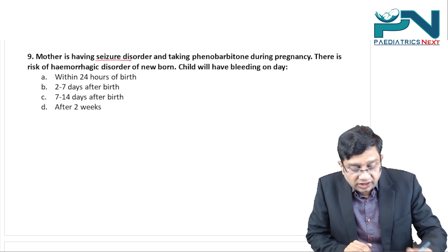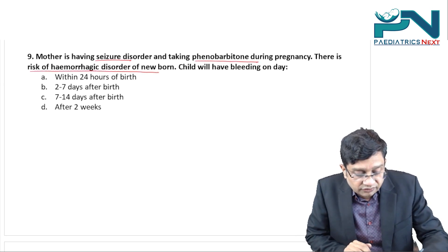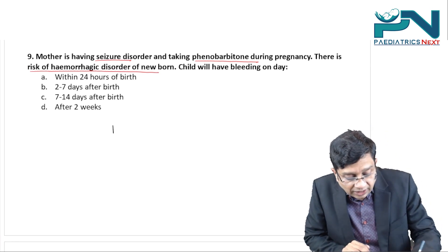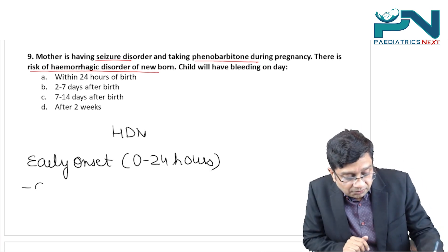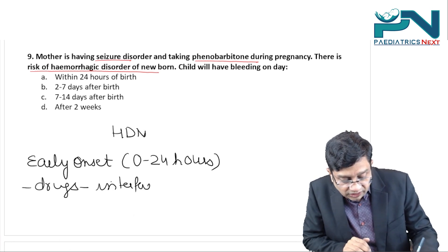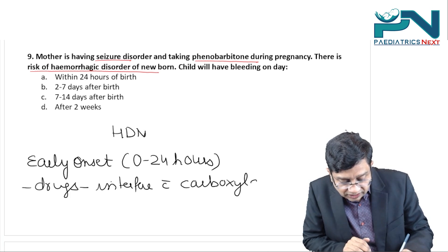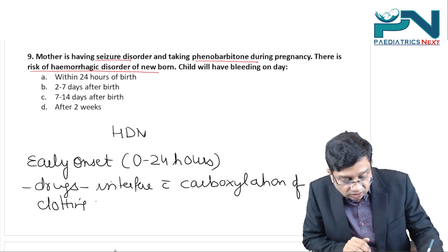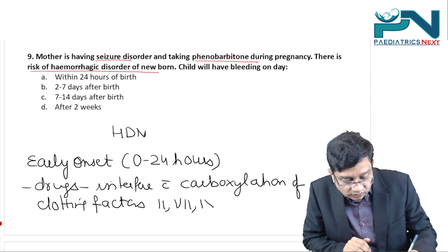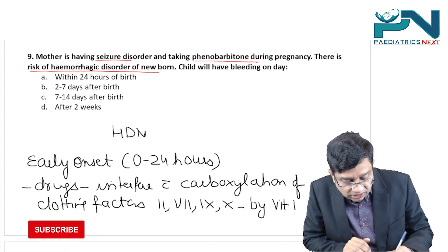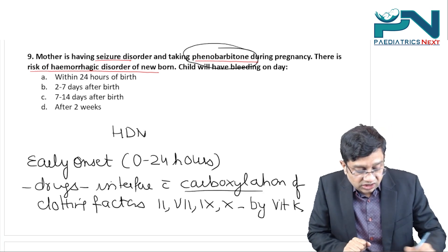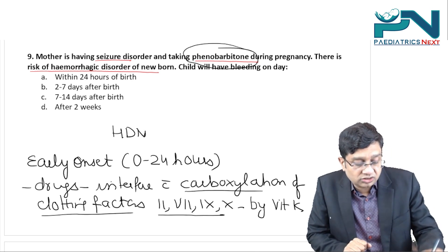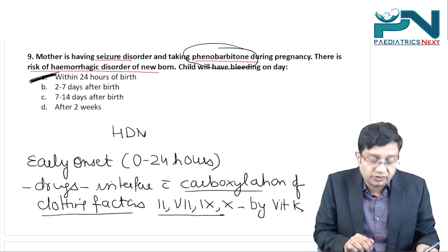A mother has a seizure disorder and is taking phenobarbitone during pregnancy — there is risk of hemorrhagic disease of the newborn. In early-onset hemorrhagic disease, hemorrhage occurs between 0–24 hours after birth. This happens because certain drugs interfere with the carboxylation of clotting factors 2, 7, 9, and 10 by vitamin K. Phenobarbitone is a hepatic enzyme inducer that interferes with this carboxylation, resulting in early-onset hemorrhage within 24 hours of birth.